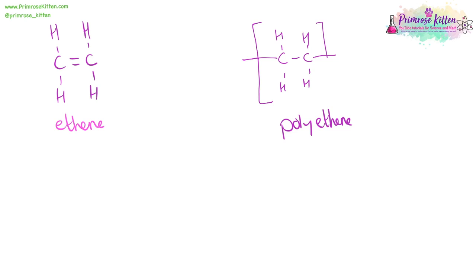Square brackets. You need to make sure your bond extends outside the square brackets. And a little n after it. And you need to have a big n in front of your monomer.